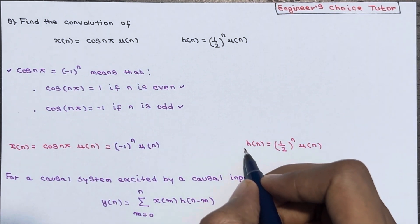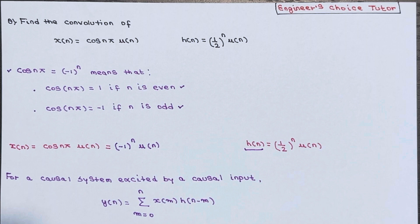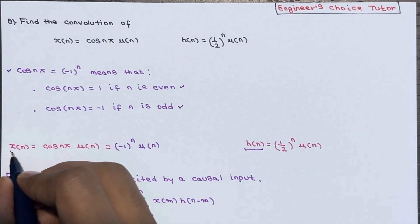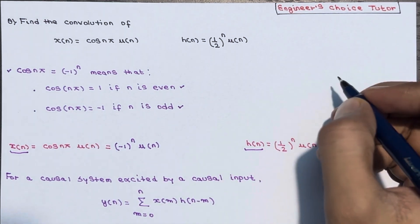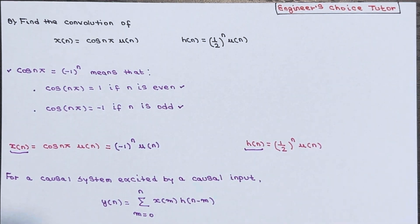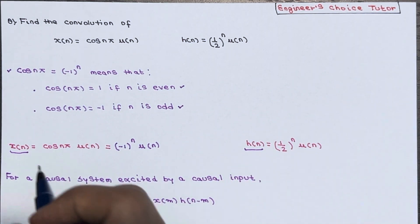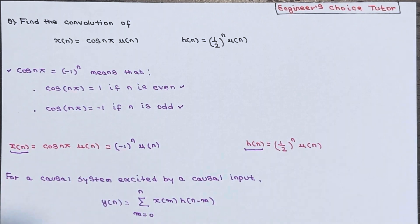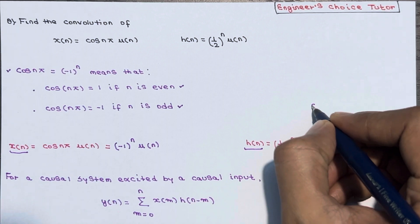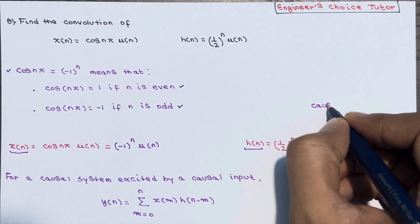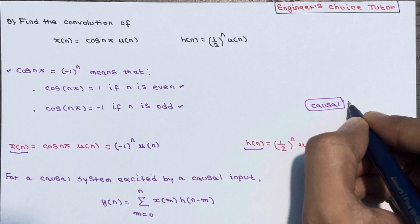h(n) is the impulse response and x(n) is the input. Both are multiplied with u(n), which means both the impulse response h(n) and the input x(n) are zero for n less than 0. That means both h(n) and x(n) are causal in nature.